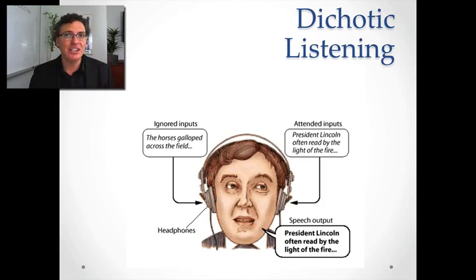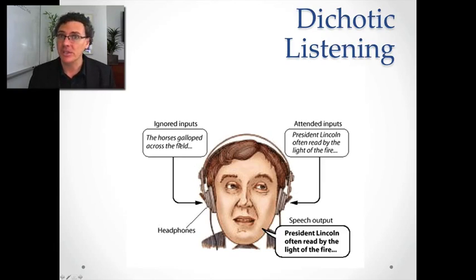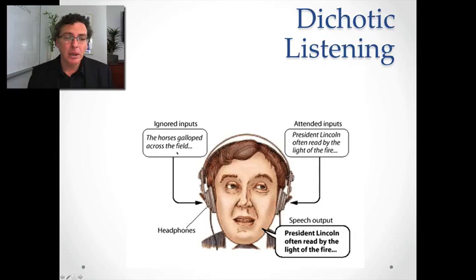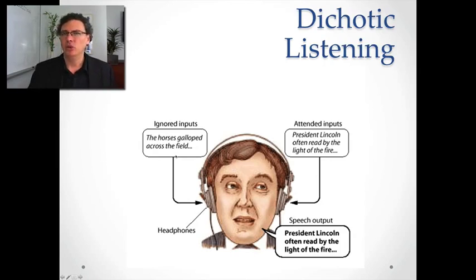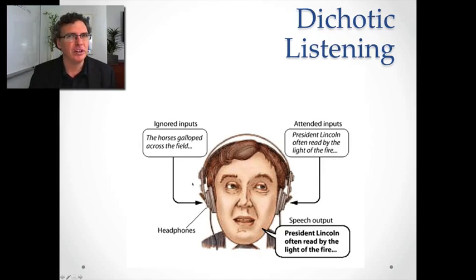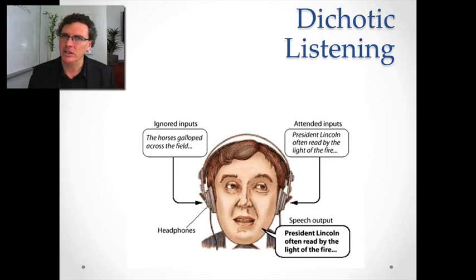However, that notion didn't seem to hold when people did more experiments. One experiment was very much like what Cherry suggested: they would occasionally present the subject's own name in the unattended channel, and sure enough, the subject did occasionally notice that — not always, but sometimes. They would also sometimes notice if profanity had been used. In an experiment context, that's a very odd, unusual thing. So it seemed as though some information was getting through.